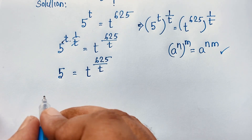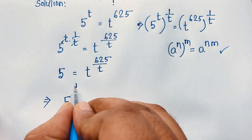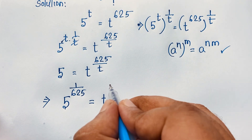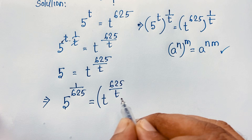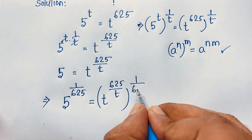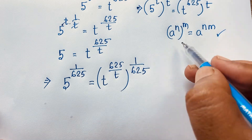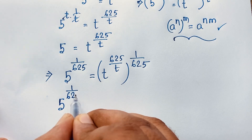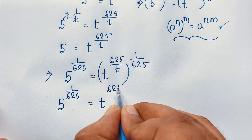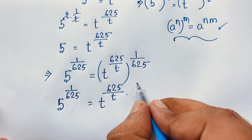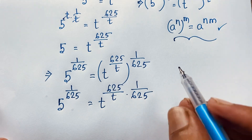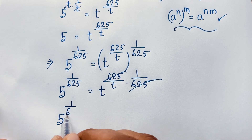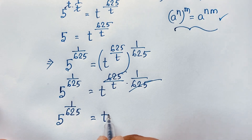Now I use both-side exponent again. I raise both sides to the power 1 over 625: 5 to the power 1 over 625 is equal to t to the power 625 over t, bracket whole to the power 1 over 625. Applying the exponent formula again, the 625 and 1 over 625 cancel out. We find 5 to the power 1 over 625 is equal to t to the power 1 over t.